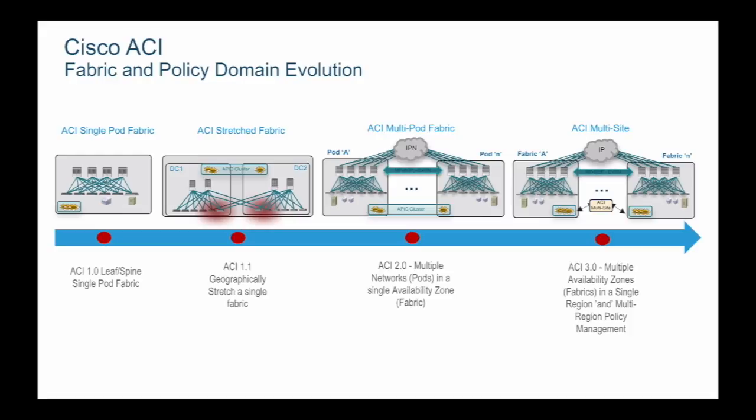ACI Release 3.0 added support for ACI multisite. ACI multisite connects multiple ACI fabrics, each managed by their own APIC clusters, over an IP network. ACI multisite provides layer 3 and layer 2 extension across multiple sites and allows you to manage tenant policies across multiple sites using the ACI multisite policy manager.